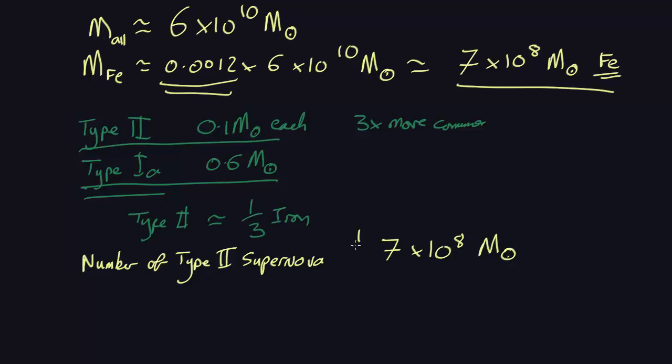times a third, because only a third of the iron comes from the type 2, divided by 0.1 solar masses, that being the mass produced each, which comes out as about 2 by 10 to the 8 supernovae. So, about 200 million of these type 2 supernovae would be needed, and a somewhat smaller number of type 1A supernovae.